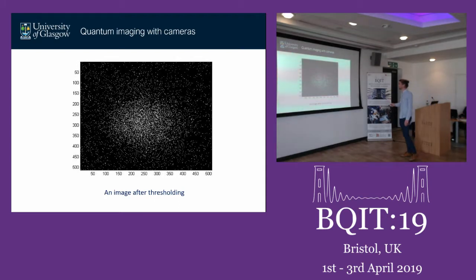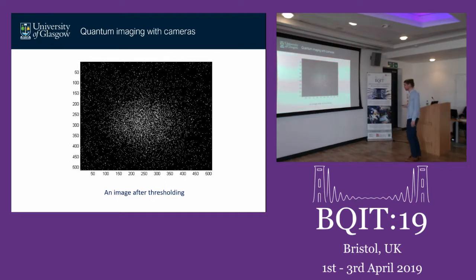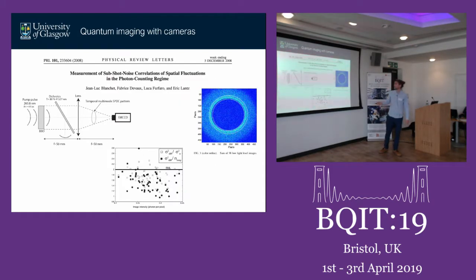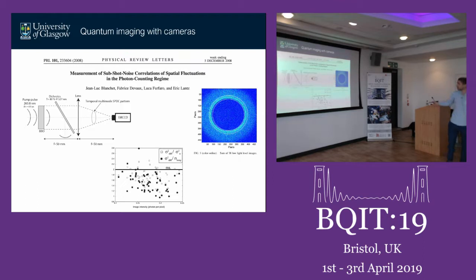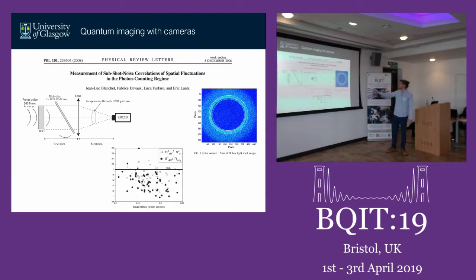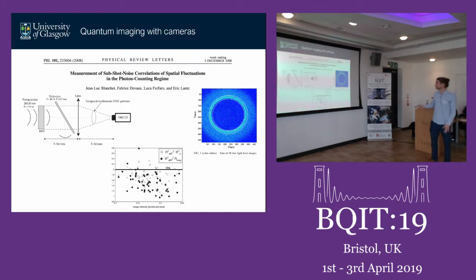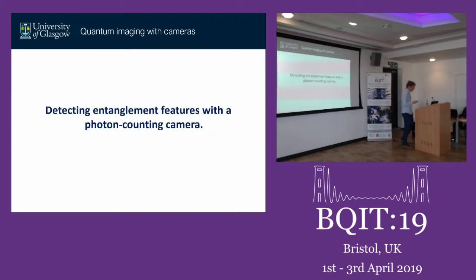Here is an example of a single frame acquired by this technique of a fluorescence parametric beam in type 1 phase matching. These kinds of images have been used in the past to detect sub-shot noise features within single frames. Using this ring-shaped type 1 SPDC source in the far field — imaging the momentum of the photons — by selecting diametrically opposed areas along the ring, you can show sub-shot noise statistics.